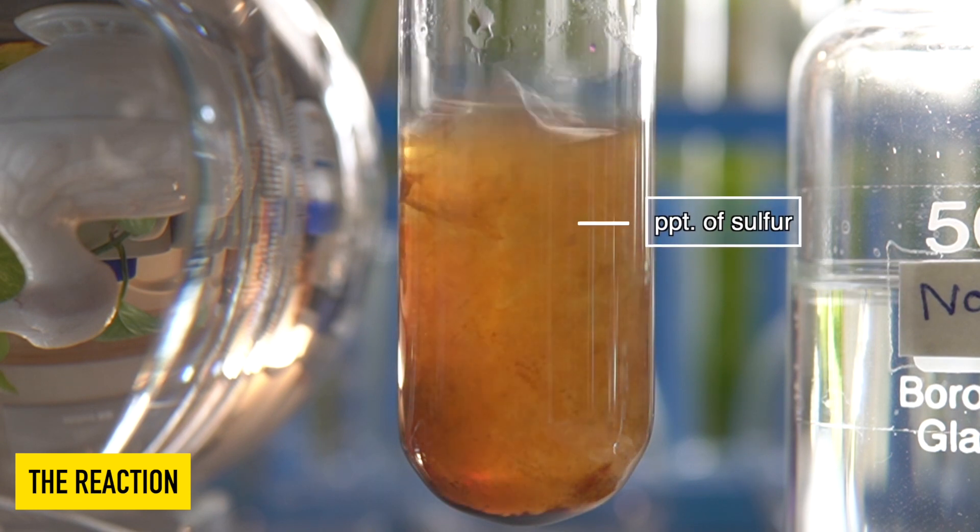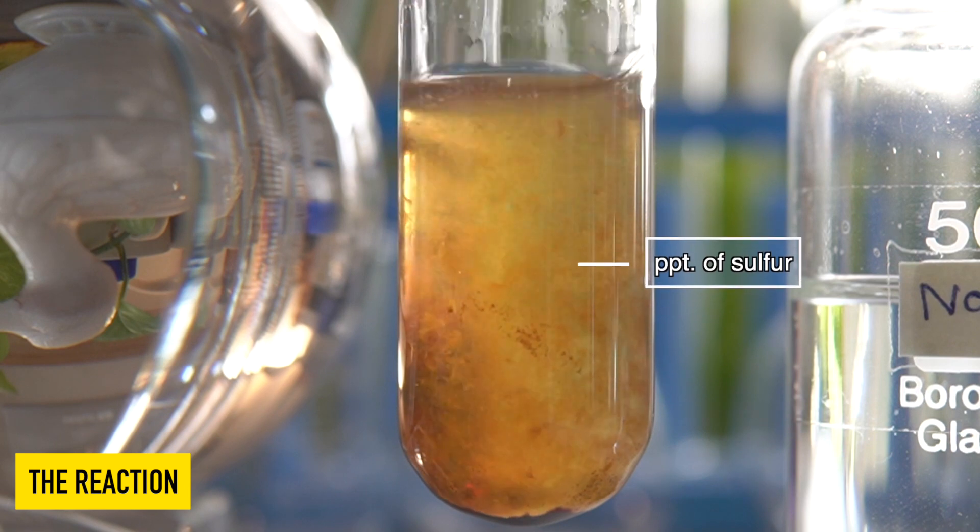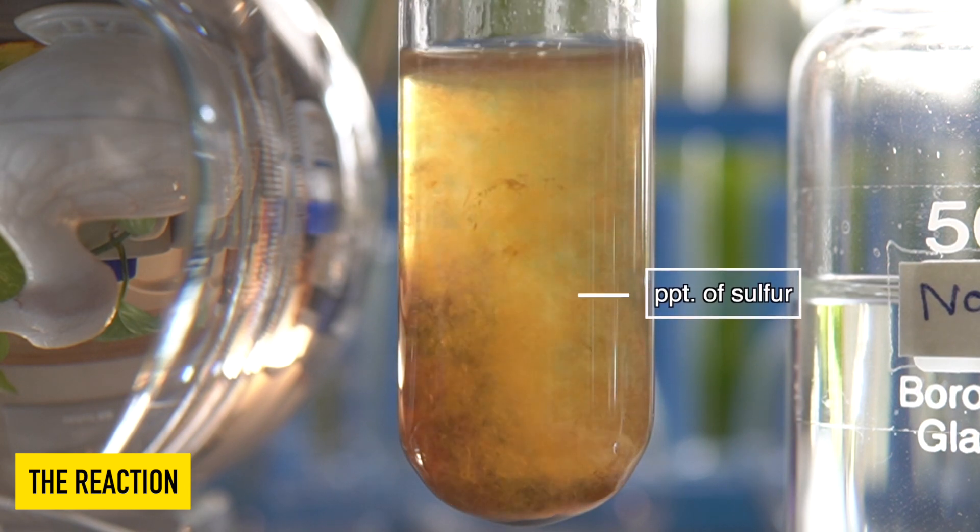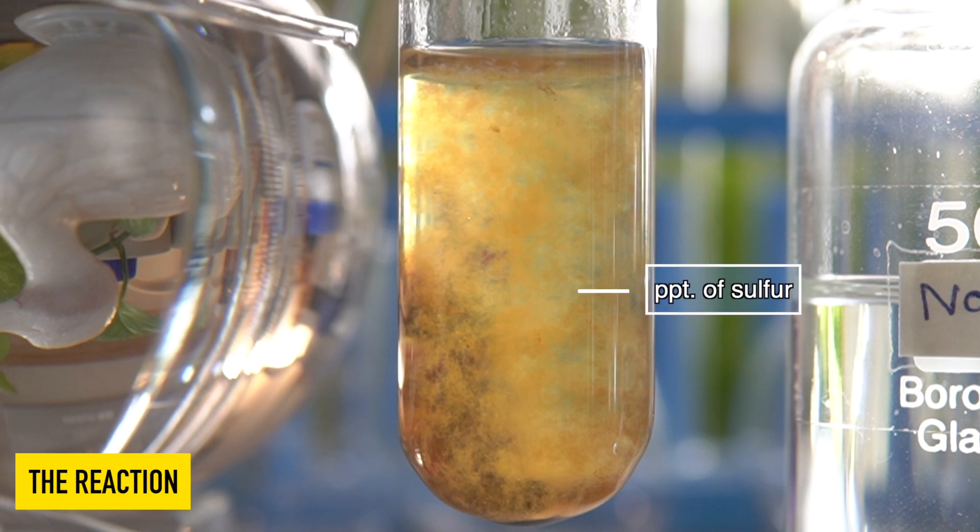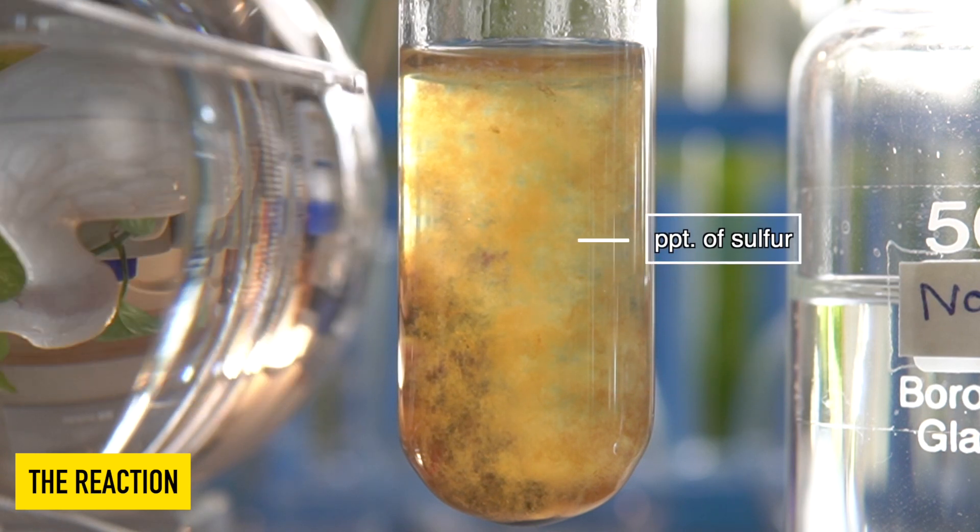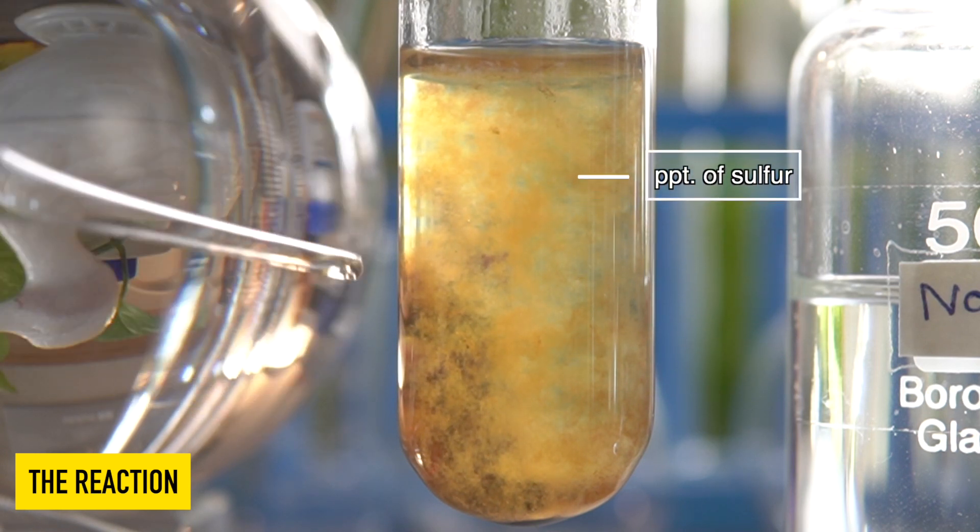Due to the chemical reaction, the purple color of potassium permanganate gradually turns into a colorless solution. And simultaneously, we also observe a yellow precipitate of sulphur.